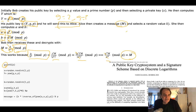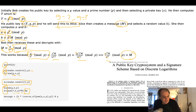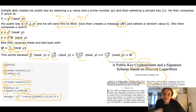To summarize the formulas: G and P are given, X is the random private key, and Y is G to the power of X mod P. Alice takes a random value between zero and P, works out A and B — where B is Y to the power of K times the message, mod P. The message is recovered as B times the inverse of A to the power of X mod P. This is based on the original paper published in 1985, which is still relevant today.